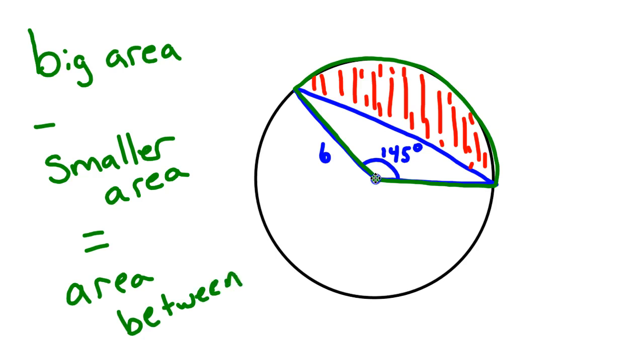So that's the general idea behind this. We're going to find the area of that sector, and we're going to find the area of the triangle, and then just subtract them.